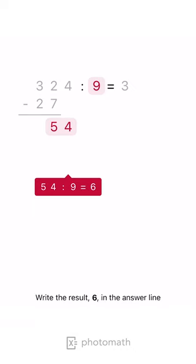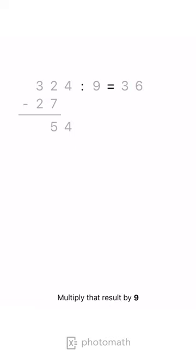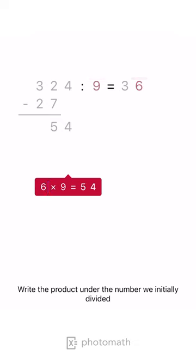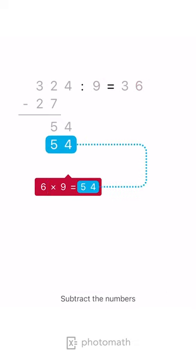Write the result, 6, in the answer line. Multiply that result by 9. Write the product under the number we initially divided. Subtract the numbers.